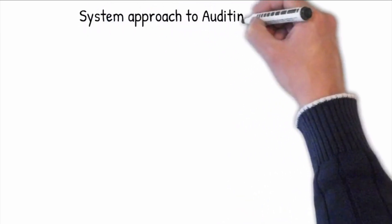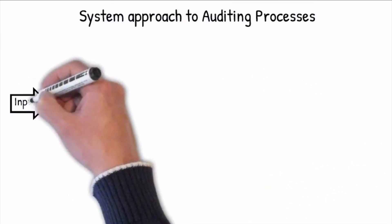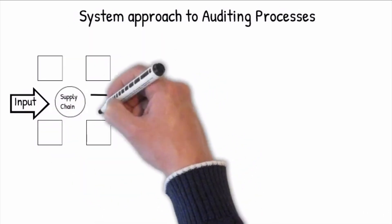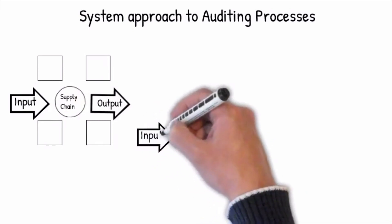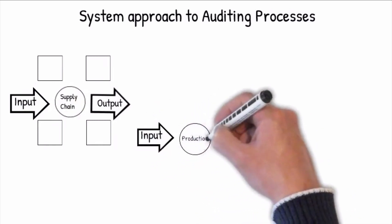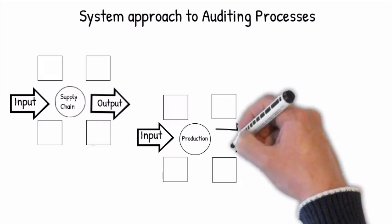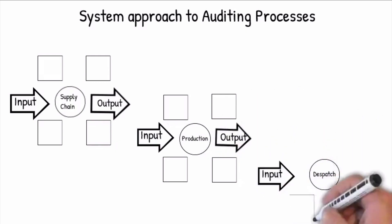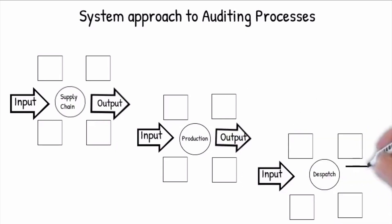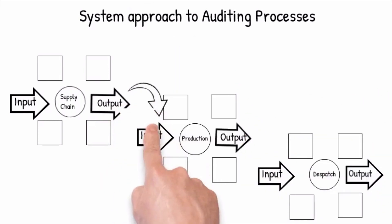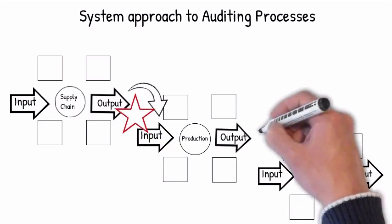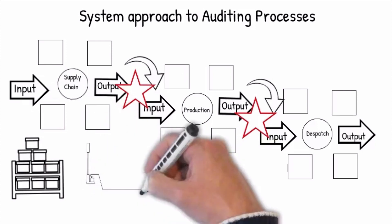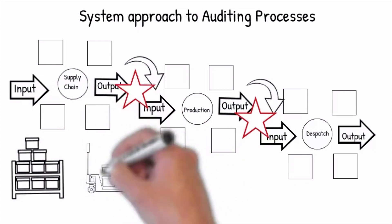The system approach to auditing processes is achieved by identifying and understanding how the different processes' output results affect the next process inputs, and identifying and mitigating risks in the process before they cause a problem for the next process. By providing a better understanding of roles and responsibilities in each process to align and manage the interactions between processes as a system, this contributes to the organization's effectiveness and efficiency in achieving its strategic objectives, thereby reducing cross-functional barriers.